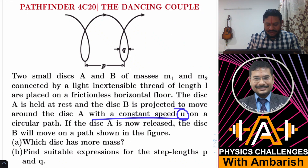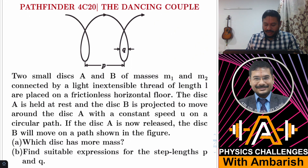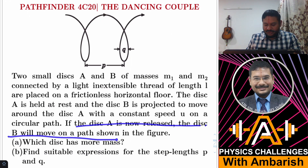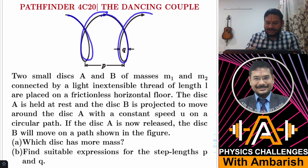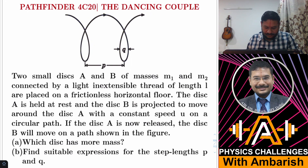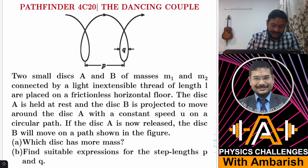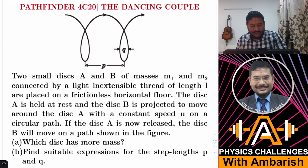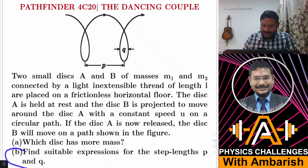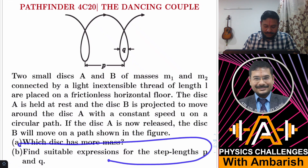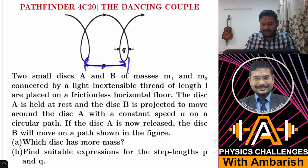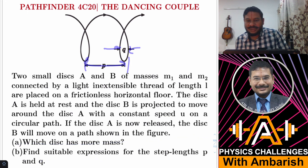Disk B moves with constant speed u on a circular path about disk A. If disk A is now released, disk B will move on a path as shown in the figure — continuing something like this kind of path. We have to answer some questions: first, which disk has more mass? Second, find suitable expressions for the step lengths p and q.